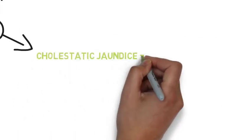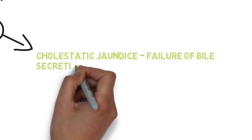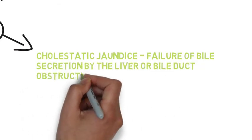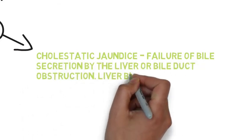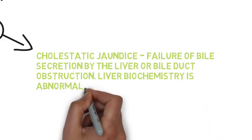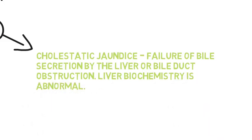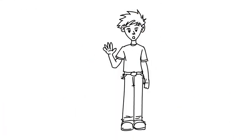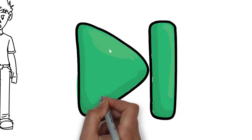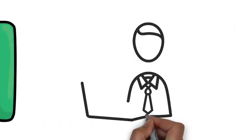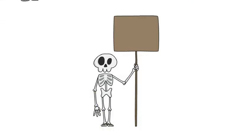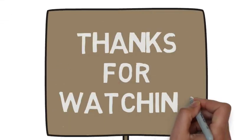Third, cholestatic jaundice — failure of bile secretion by the liver or bile duct obstruction; liver biochemistry is abnormal. We will discuss these three types in detail in the next video. Thanks for watching.